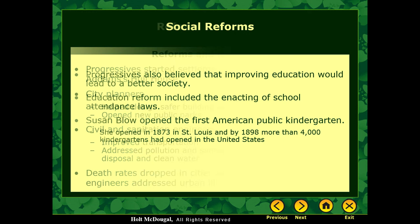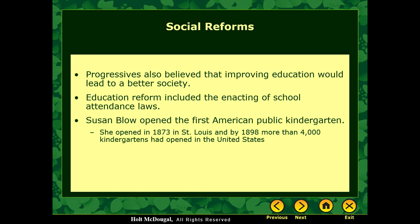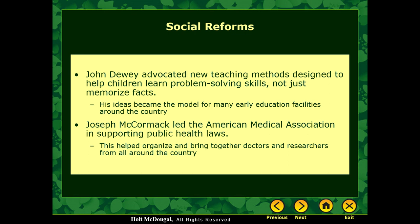Progressives also believed in improving education, which would lead to a better society. You end up with a lot of education reform, school attendance laws — this is where we get truancy laws. One major advocate was a woman named Susan Blow, who saw a need for children to be educated. She opened the very first public kindergarten in 1873 in St. Louis, where kids didn't have to pay to attend. Within 25 years, more than 4,000 kindergartens had been opened in the United States. Then there's John Dewey, who advocated a new teaching method designed to help children learn problem-solving skills, not just memorize facts, which became a major model for early education.